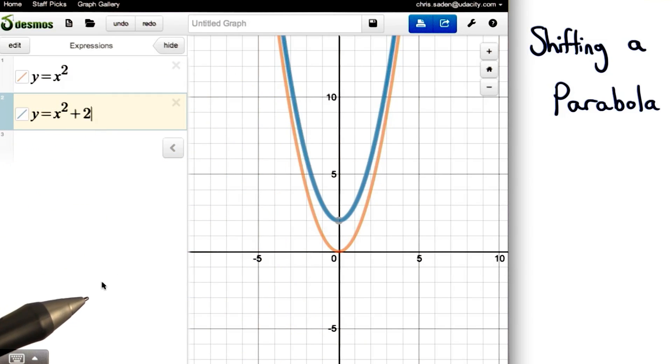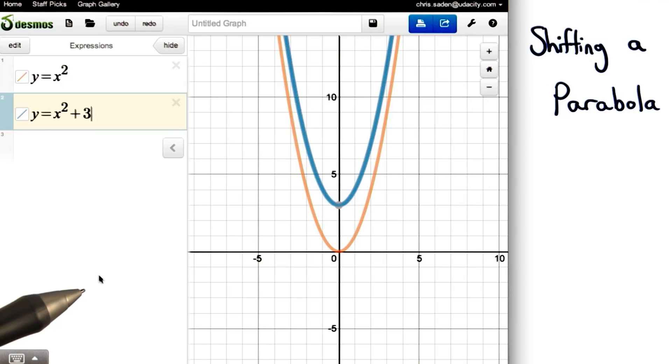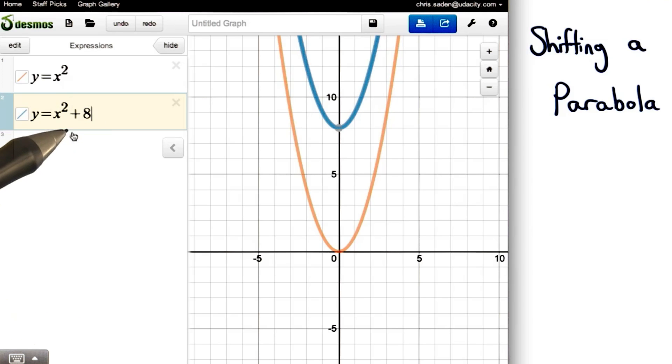We can also make this graph go up 2 units, 3 units, 4 units, or even 8 units. So, we can see that adding a constant term to the end of our parabola will shift it up.